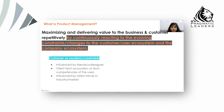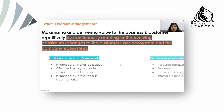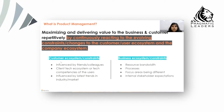So we want to maximize and deliver value to the business and customers repetitively — but by doing what? The product manager's role is to continuously react to the evolving constraints or changes in the customer or user ecosystem, and also in the company ecosystem. You might say: I built the product once and I'm done, why do I need a product manager? You need one because the customer ecosystem and the business ecosystem keeps on changing.